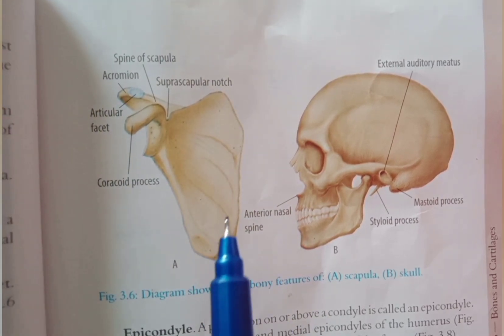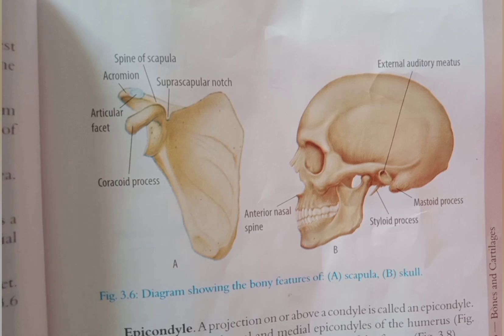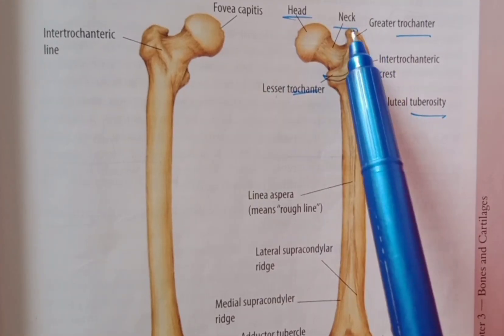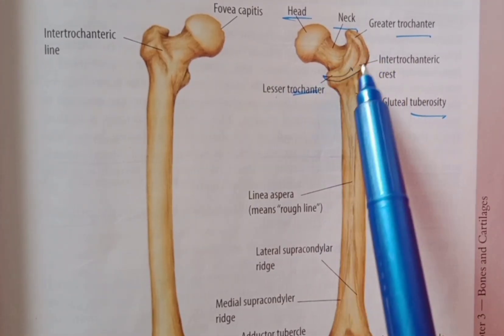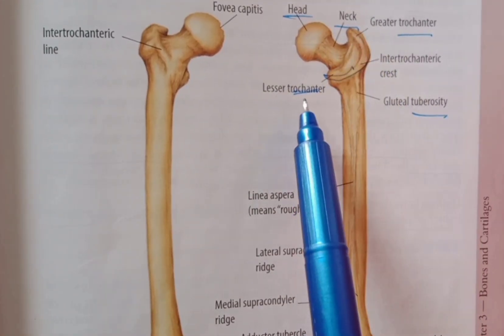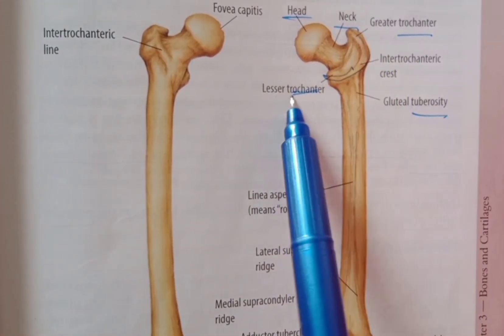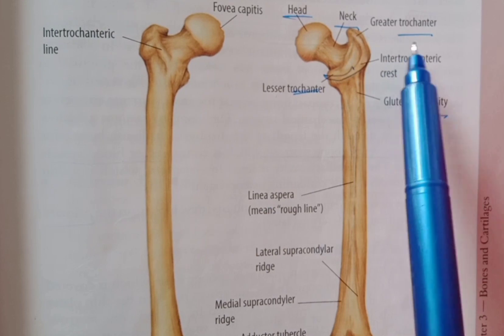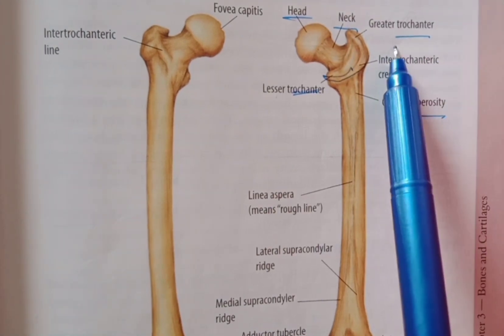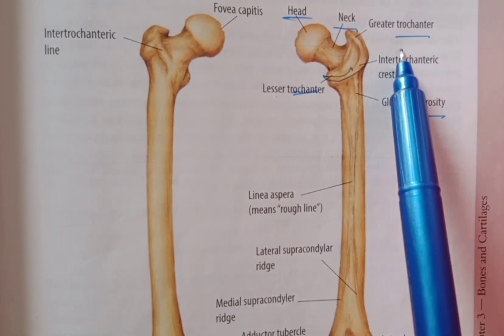Next, we have the term trochanter. Trochanter is a blunt prominence. There are two trochanters — a lesser and a greater trochanter — which function to provide attachment for muscles.